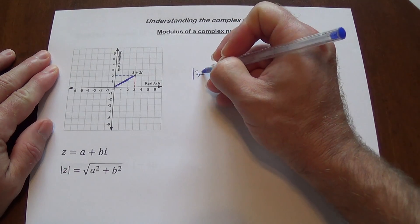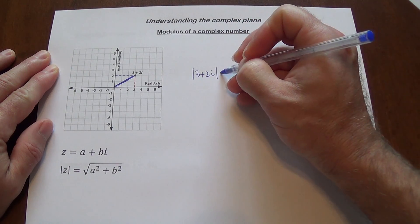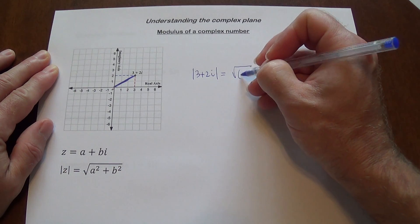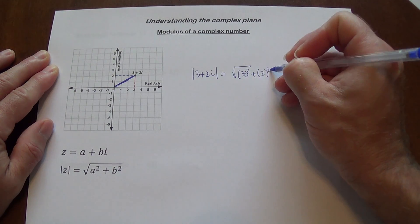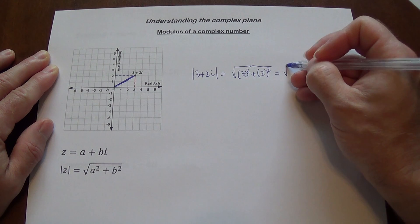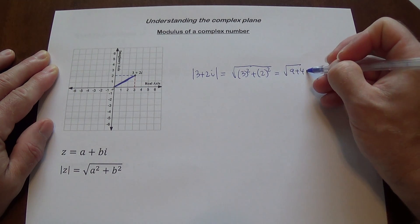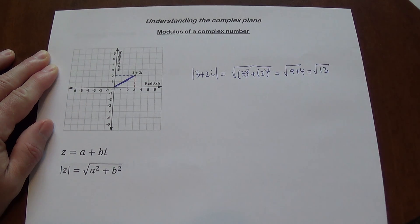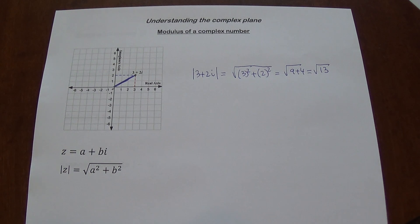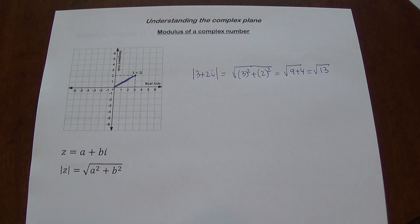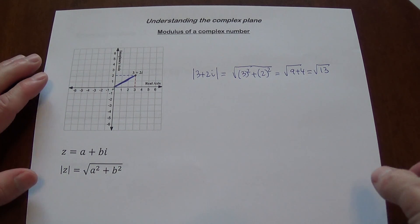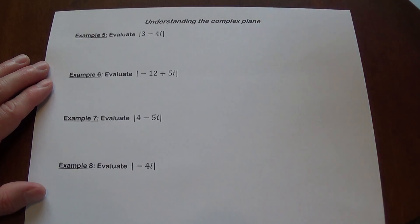the modulus of 3 plus 2i is going to be the square root of 3 squared plus 2 squared, which is going to be square root of 9 plus 4, which is going to be square root of 13. This will be the modulus, which is basically the distance between, as I already mentioned, the distance between the origin and the number on the complex plane.